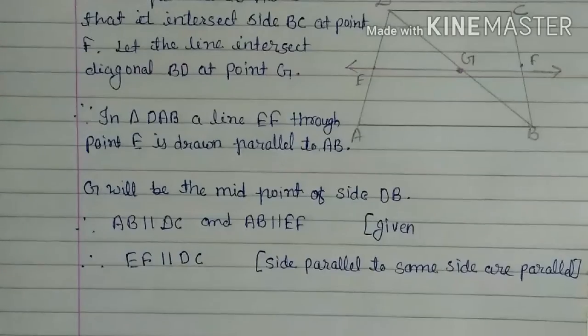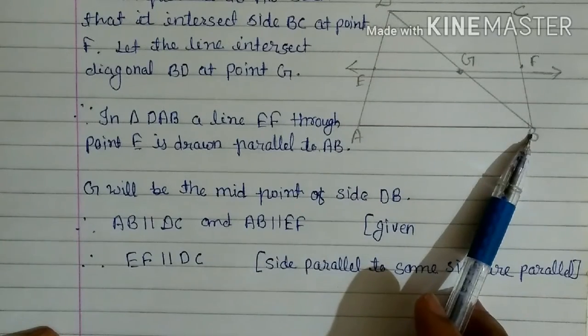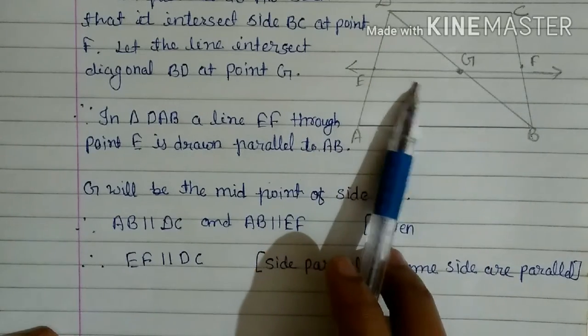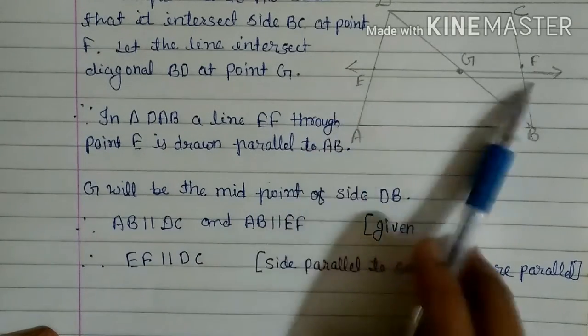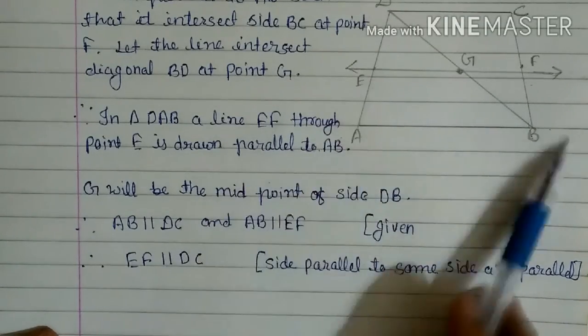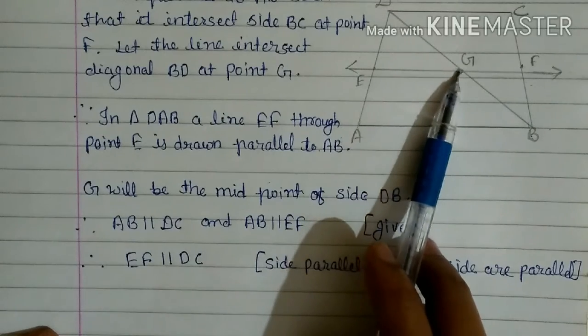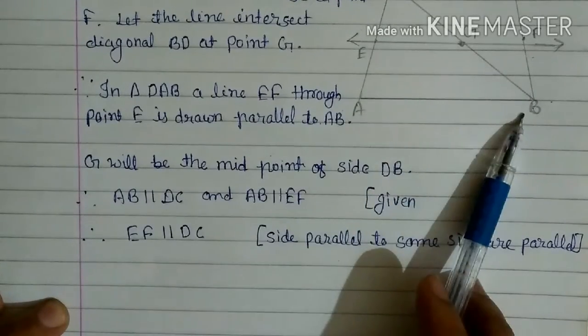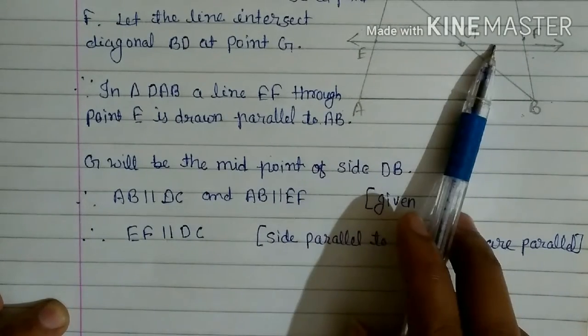Now see in triangle ABD. In triangle ABD, through point E is drawn parallel to AB. Here you see E, this line E is drawn parallel to AB. In this triangle ABD, a line which is parallel to AB is drawn. And here E is the midpoint of AD. AB parallel DC is given, and AB parallel EF is also given.